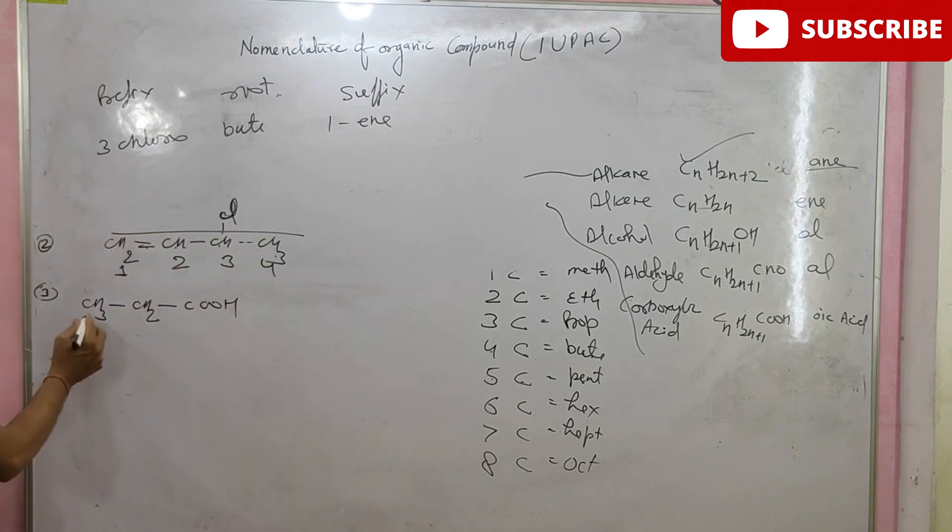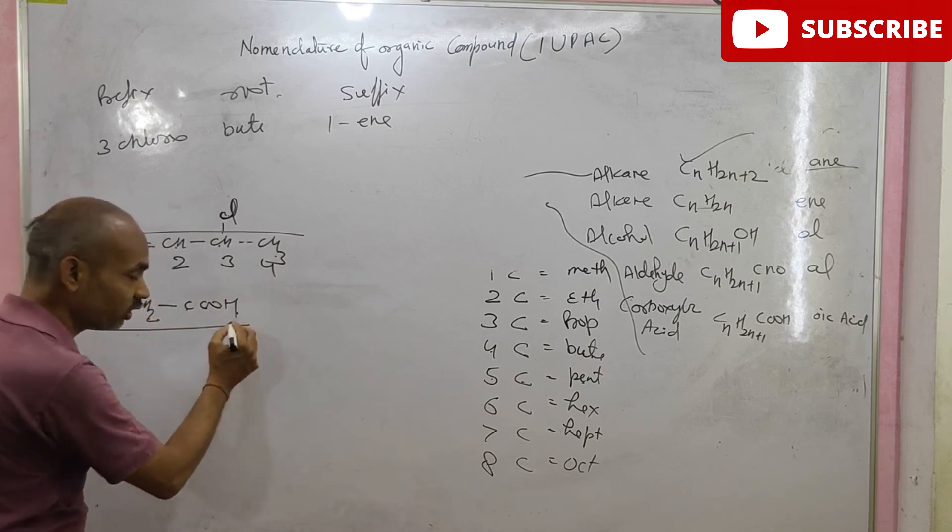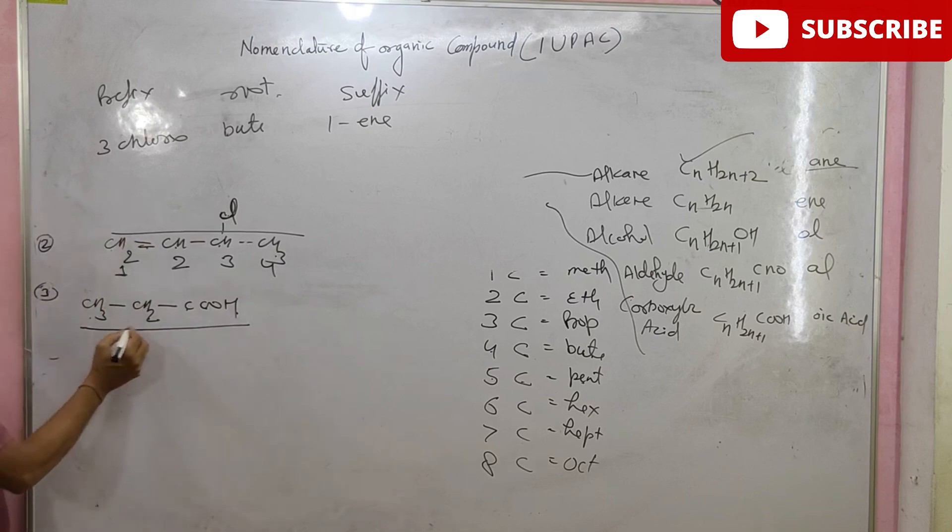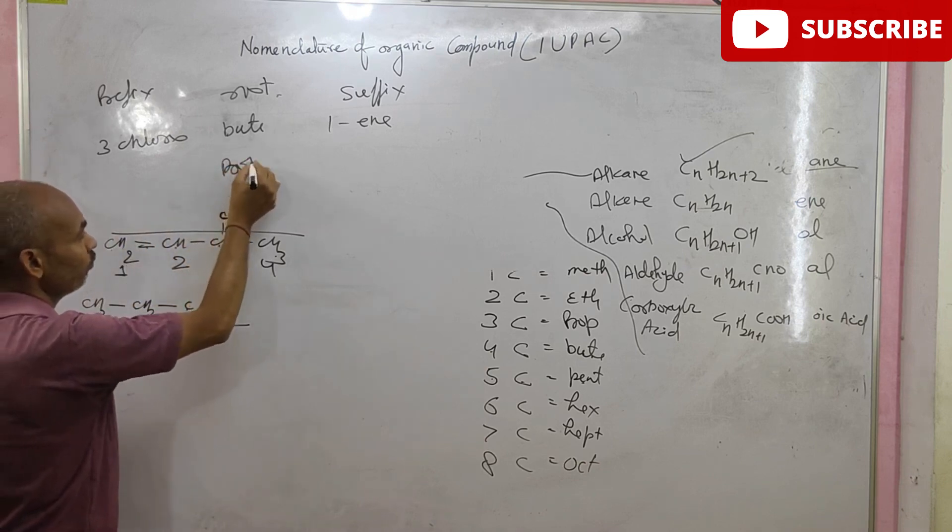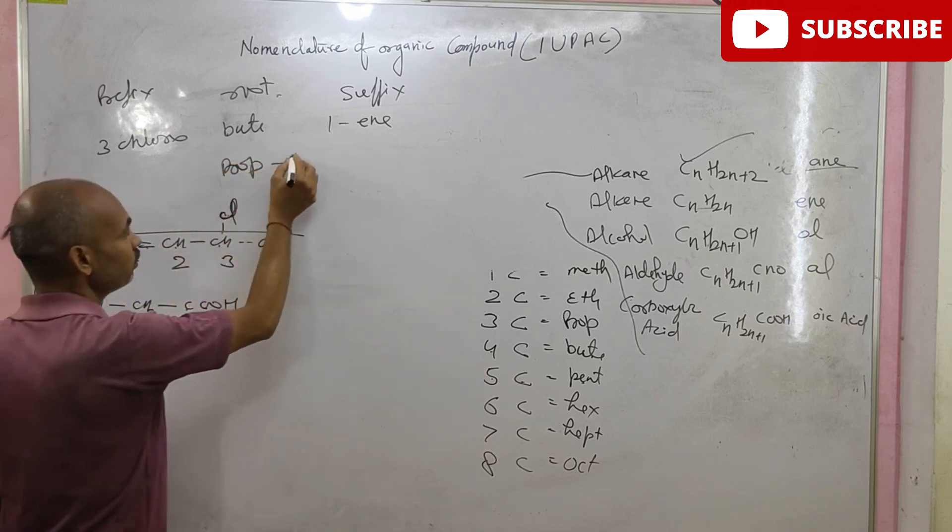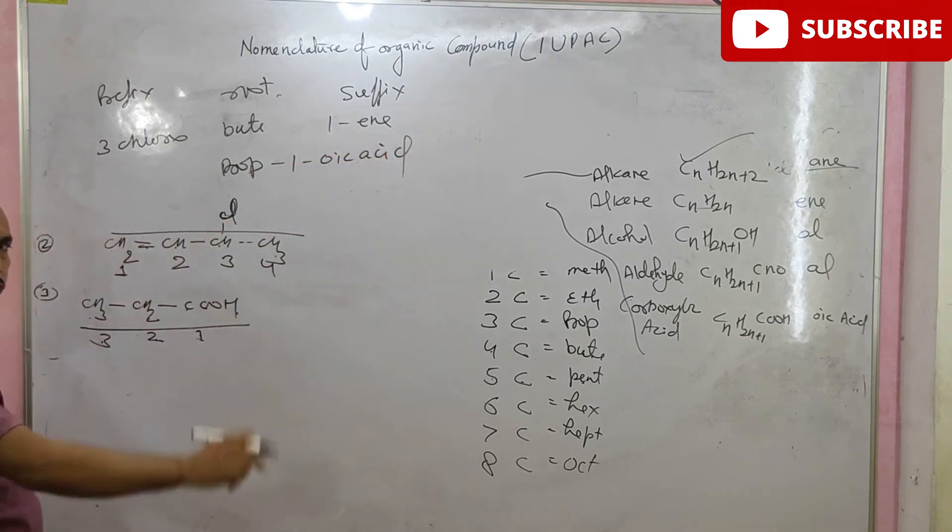The third example is CH3, CH2, COOH. First of all, find out the longest chain. And then, start numbering from this side. 1, 2, 3. Make a prop. There is no prefix. Prop-anoic acid. Because it is carboxylic acid.